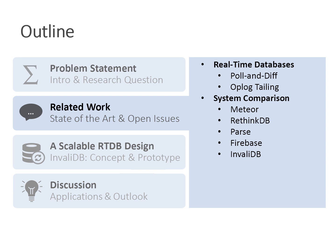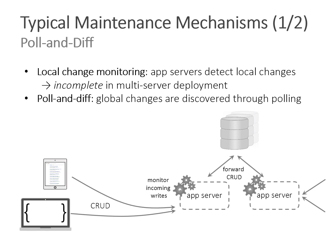Now let's talk about how current technology addresses this problem. There are two prevalent mechanisms for providing real-time queries. The first is called poll-and-diff. Different application servers handle different users who subscribe for real-time queries. Whenever an application server receives a write operation, it writes to the database and checks whether any query subscriptions it handles are affected by that write, then sends out change notifications.